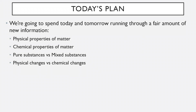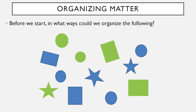We're going to spend today and tomorrow running through a fair amount of new information. We're going to talk about physical properties of matter, chemical properties of matter, pure substances versus mixed substances, and physical changes versus chemical changes. We'll cover about half of that today. To start, think about the images on screen — in what ways could you organize those different shapes by some sort of categorical method?